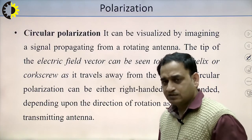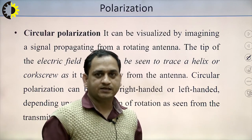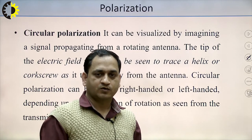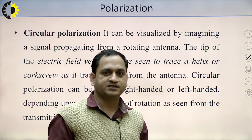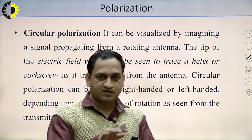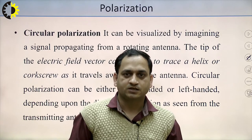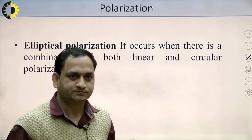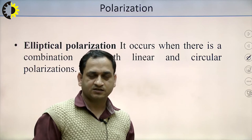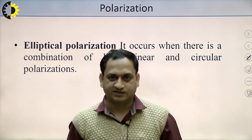Next is circular polarization. In circular polarization, it is visualized by imagining a signal propagating from a rotating antenna. If the E and H components, observed from the transmitter side, are in circular or rotational form, we call it circular polarization. Next is elliptical polarization, which occurs as a combination of both linear and circular polarization.